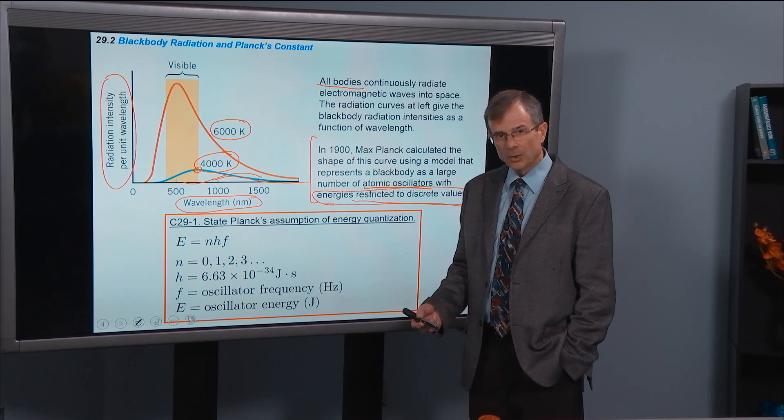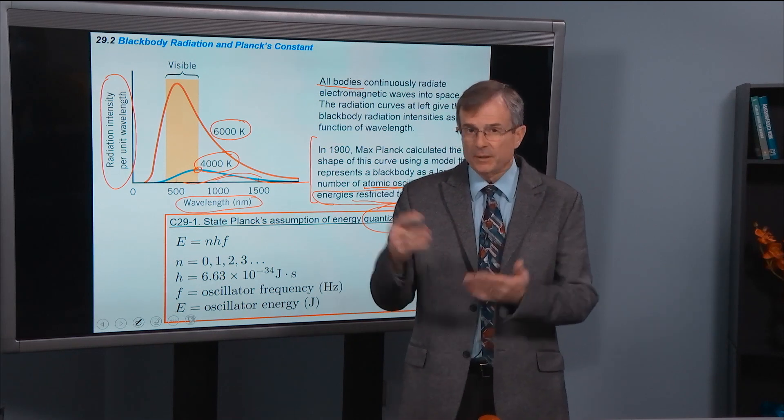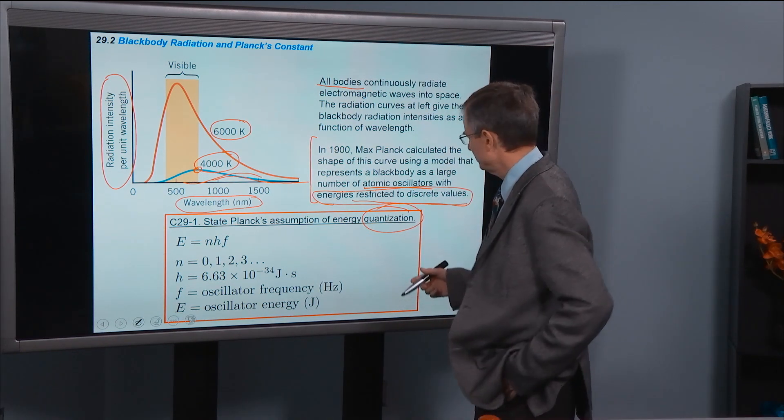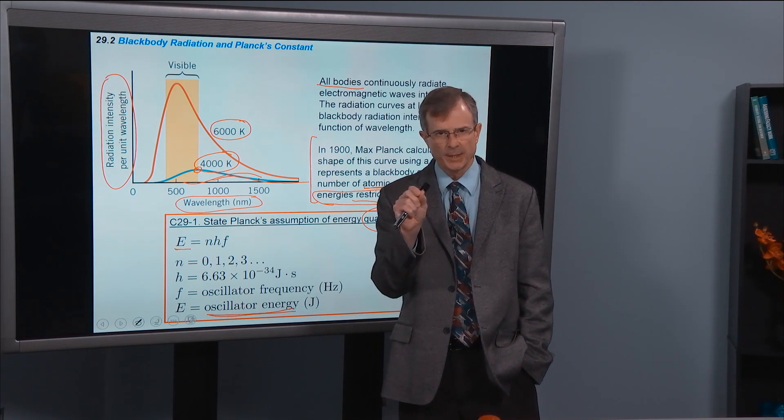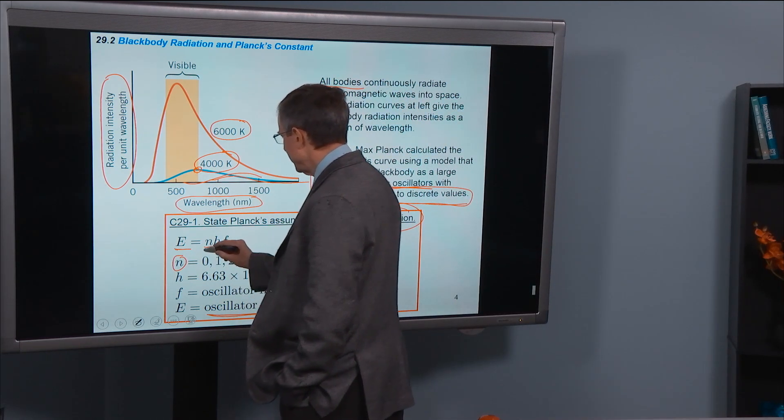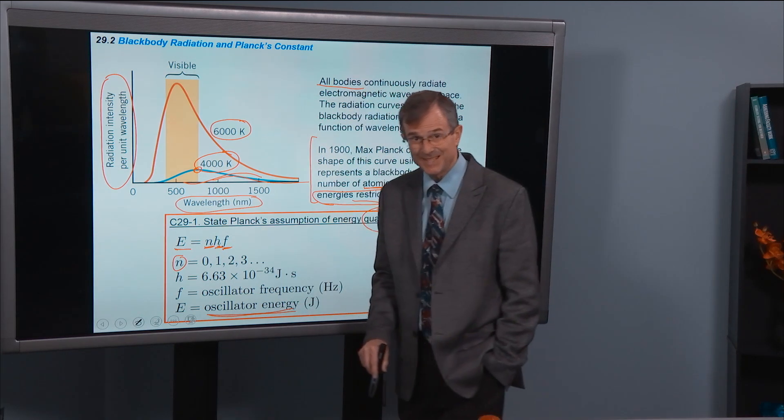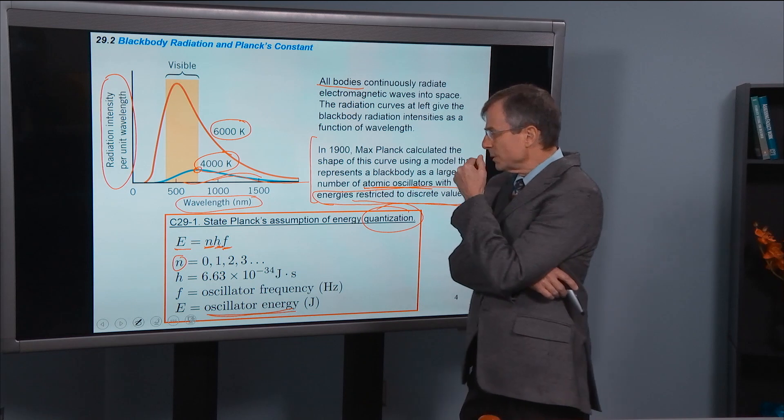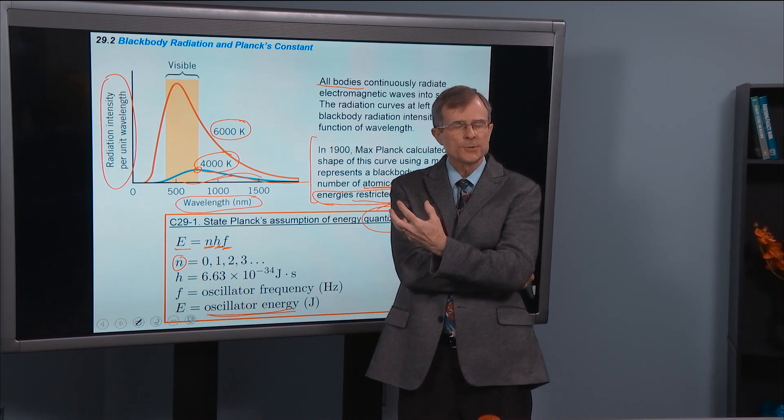The word that we use now to describe the restriction to discrete values is called quantization. It means that something, the energy in this case, is restricted to discrete values. And what his assumption was is that those energies, so this is the energy of one of those little oscillators, think of it as just a little mass on a spring, tiny little mass on a spring inside of a body, that the energy of that oscillator is an integer, n, times a constant that I want to say a little bit more about, times the frequency of the light, of the electromagnetic radiation. So this was a bold assumption, this quantization of energy. It turns out to have reshaped our whole understanding of our physical world in the physics.